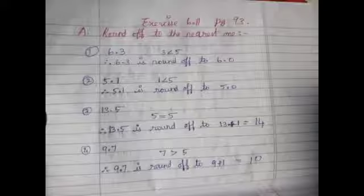Next 5.51. So 1 is less than 5, so we need to round off to 5. 13.5, 5 is equal to 5, so add 1 with that. 13 plus 1 is 14. 9.7, 7 is greater than 5, so 9 plus 1 is 10.